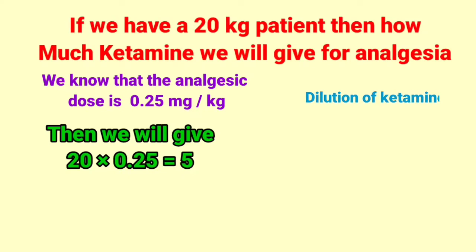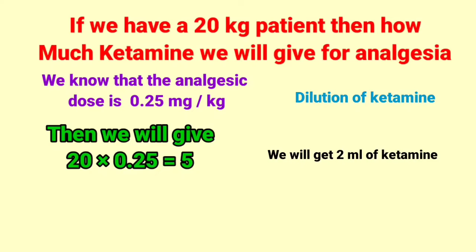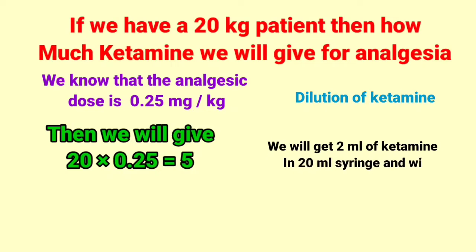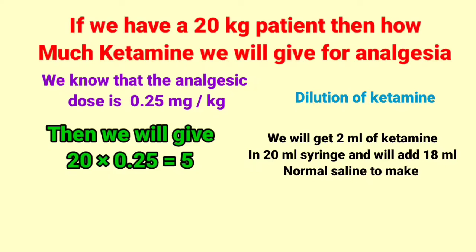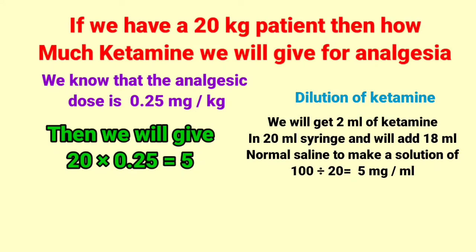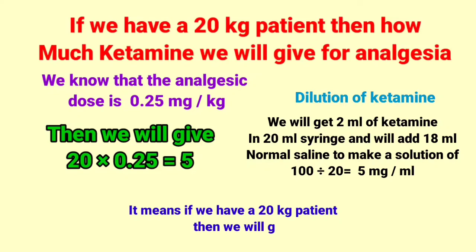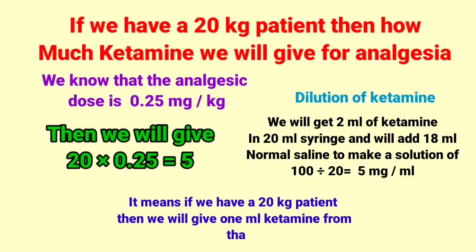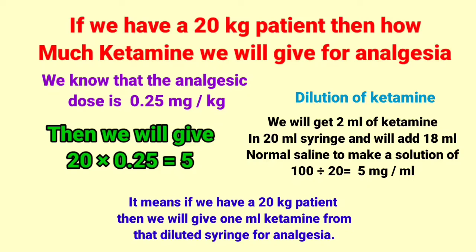Now the dilution of ketamine. First we will take 2 ml of ketamine in a 20 ml syringe and add 18 ml normal saline, to make a solution of 100 divided by 20 equals 5 mg per ml. This means if we have a 20 kg patient, we will give 1 ml ketamine from that diluted syringe for analgesia.